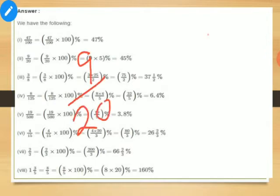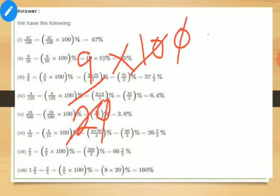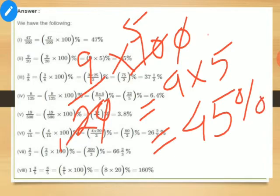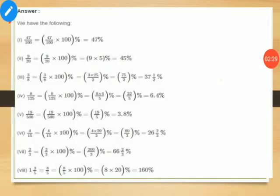If the fraction given is 9 upon 20 and you have to calculate the percentage, multiply the fraction by 100. The 20 will cancel with 100 leaving 5, so 9 multiplied by 5 gives you 45 percent. Similarly, you will do the remaining parts. If a mixed fraction is given, first convert it into an improper fraction, then multiply by 100 and cancel to get the percentage.